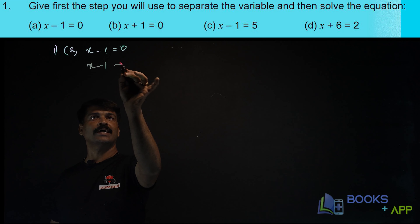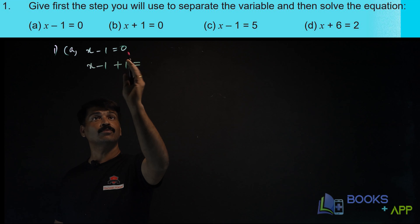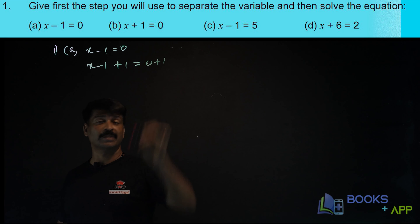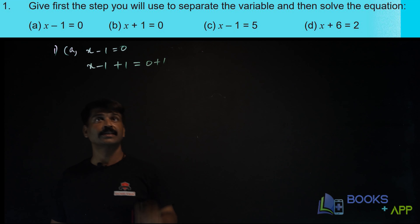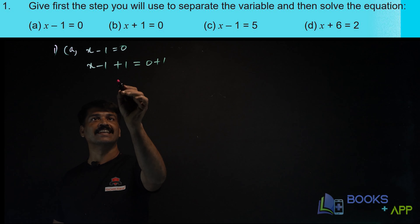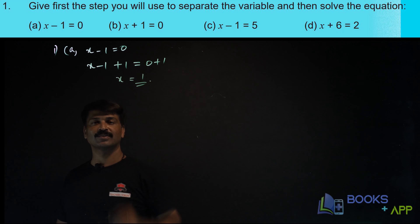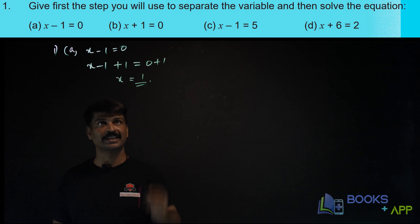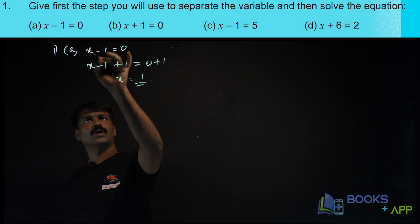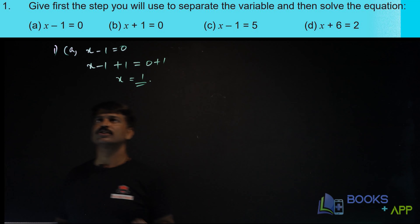You add plus 1 on the left side, and on the right side also you have to add plus 1. Now minus 1 and plus 1 get cancelled. So x is equal to 1 — you get the solution as 1. The value of x is 1. You verify: 1 minus 1 is equal to 0, so that is right.